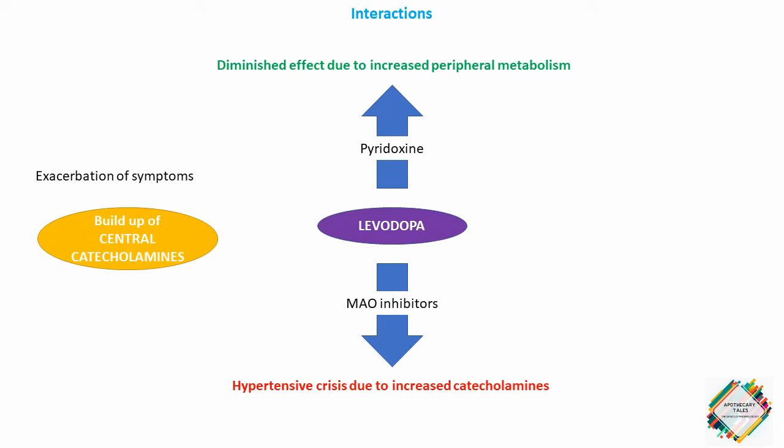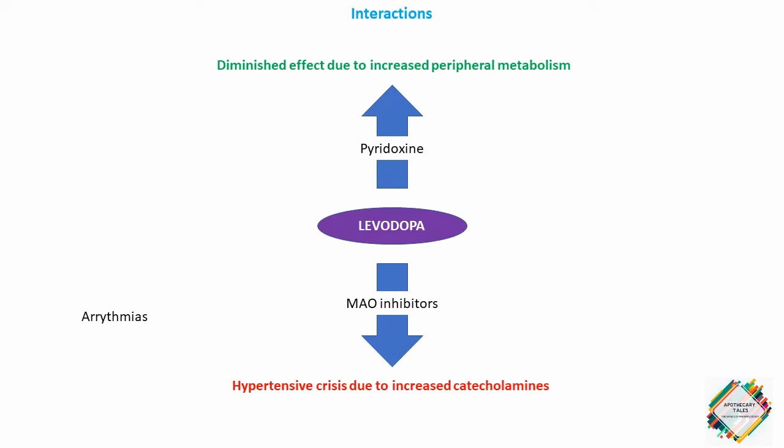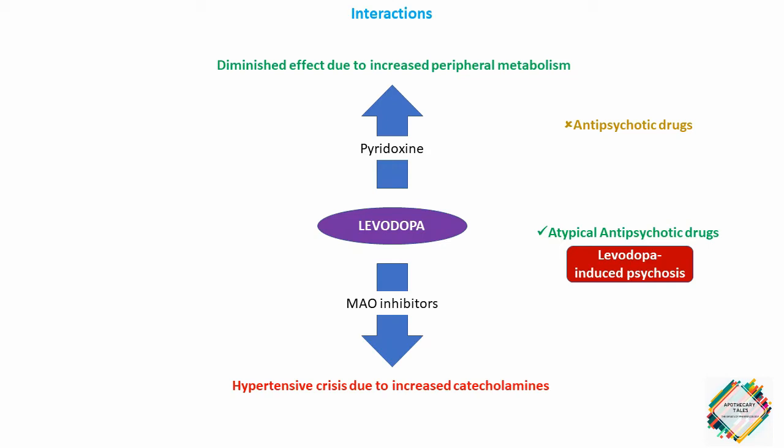Cardiac patients should be carefully monitored for the possible development of arrhythmias. Antipsychotic drugs are generally contraindicated in Parkinson's disease because they potentially block dopamine receptors and may augment Parkinsonian symptoms. However, low doses of atypical antipsychotics are sometimes used to treat levodopa-induced psychotic symptoms.